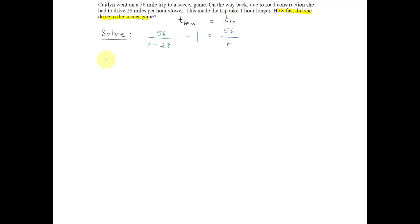All right, let's solve. Well, we can solve by clearing denominators. So we can see that the LCD, there's only two denominators, so it will be r times r minus 28.